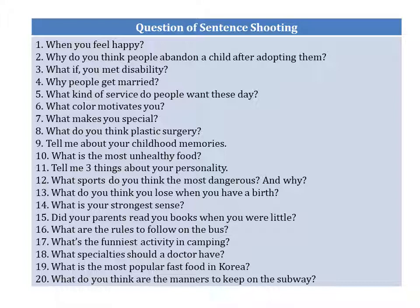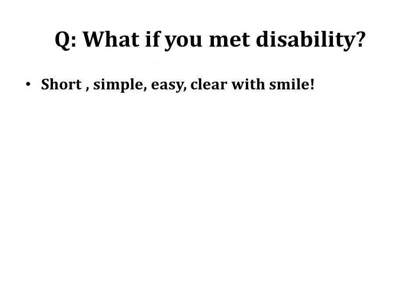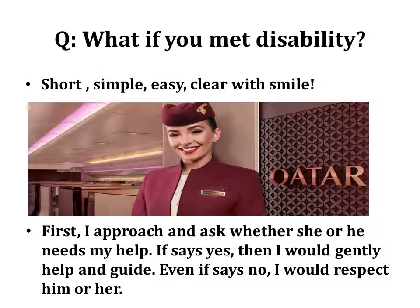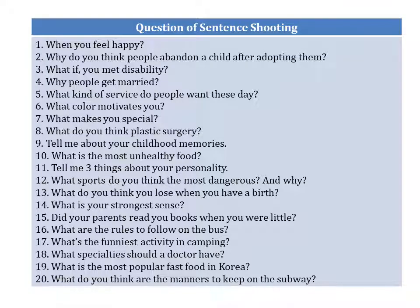There are twenty questions that other applicants got in sentence shooting. When you make those answers, the key is to make it simple and positive. For example, imagine you got the question 'What if you met a person with a disability?' Make it short, simple, easy, and clear with a smile: 'First, I would approach and ask whether he or she needs my help. If they say yes, I would gently help and guide. Even if they say no, I would respect him or her.' So now check those questions, write your notes, write your answers, and keep reviewing and repeating — then you'll become fluent and gain confidence.